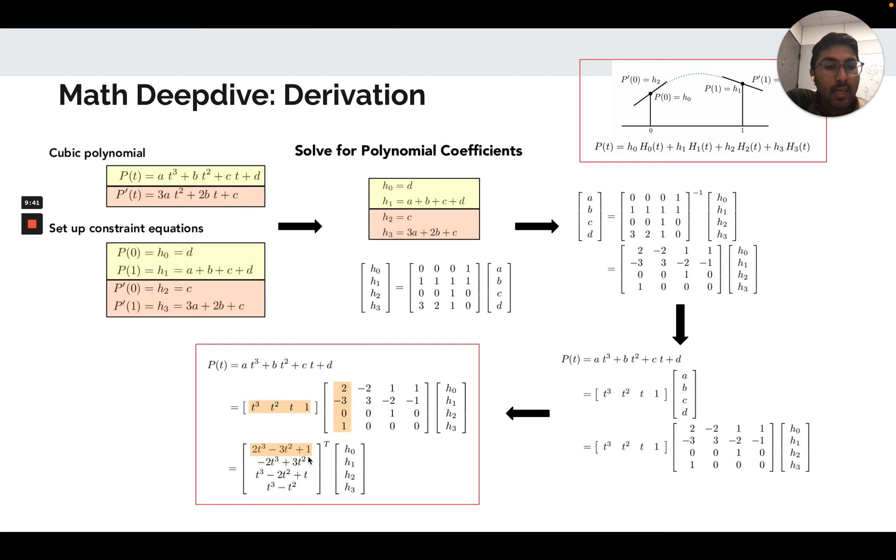Reading off the columns of the inverted matrix gives us the coefficient of a different basis. The basis t, t squared, t cubed, and one is really simple. It's a basis for cubic polynomials. Instead, we can derive another basis given by these coefficients in the columns, just doing a row column multiplication to get a system of four basis. These are called the cubic Hermite basis polynomials.